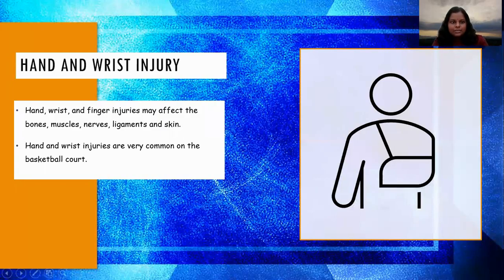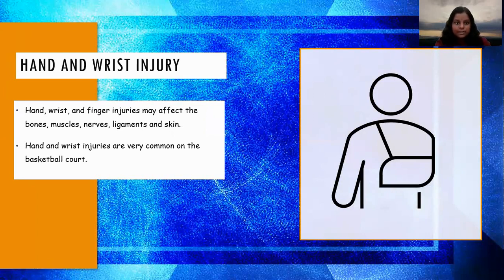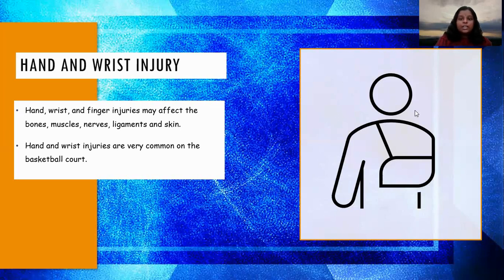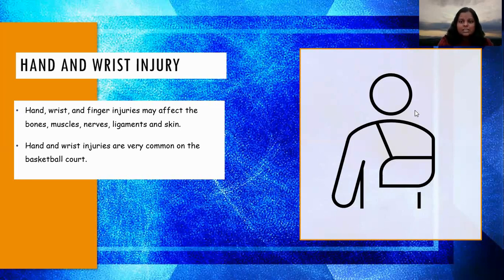So what is hand and wrist injury? Hand and wrist injury may affect bones, muscles, nerves, ligaments, and skin. This injury is very common in basketball and is frequently caused by poor technique and lack of awareness of sports medicine. The common types of injury are sprains and fractured or broken fingers and wrists. Sprains are caused by the ligament being overstretched, which causes micro-tears.